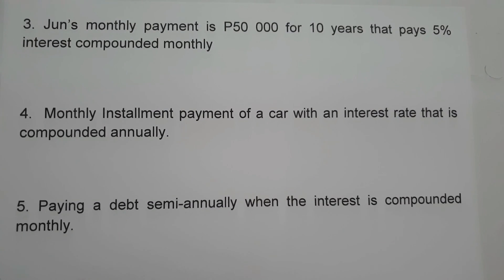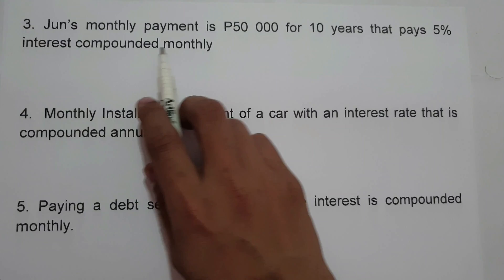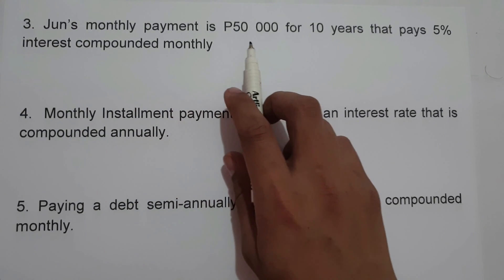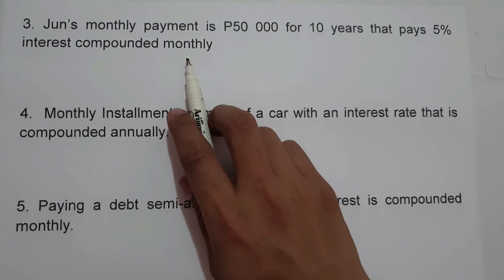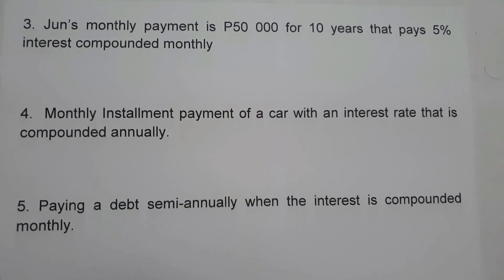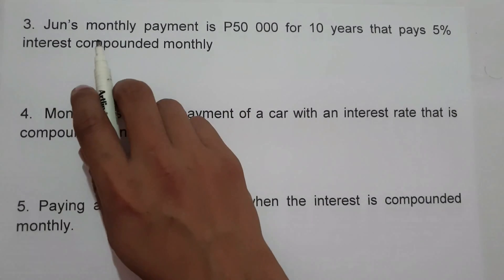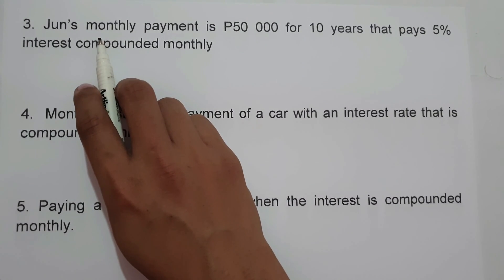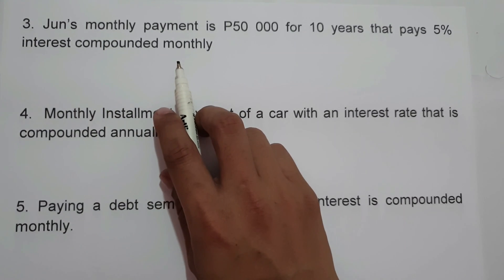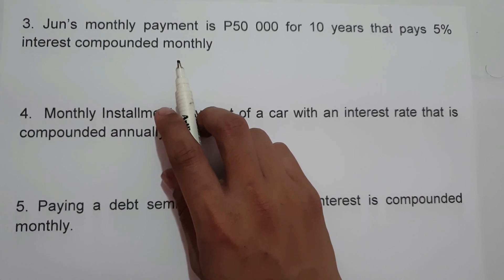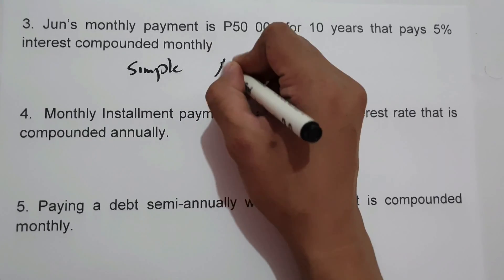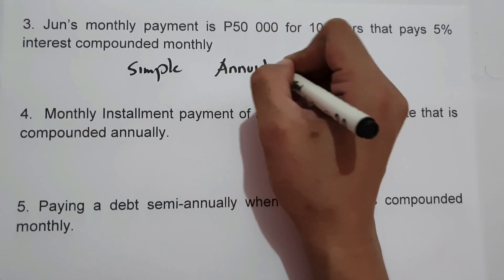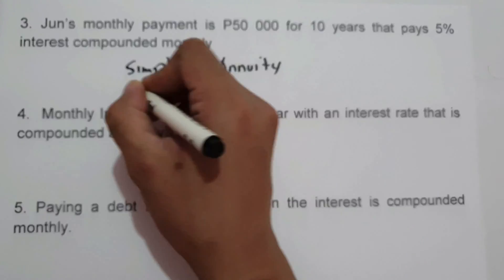On example number three, June's monthly payment is $50,000 for 10 years that pays 5% interest compounded monthly. Since the payment interval is monthly, which is equal to the compounding interval which is also monthly, therefore the given situation represents simple annuity.